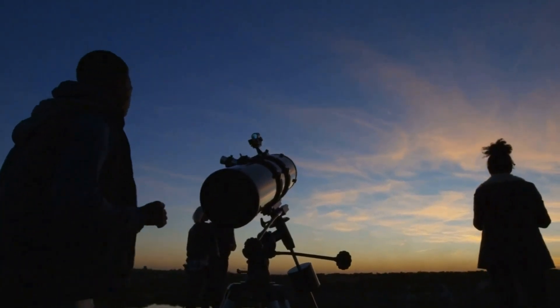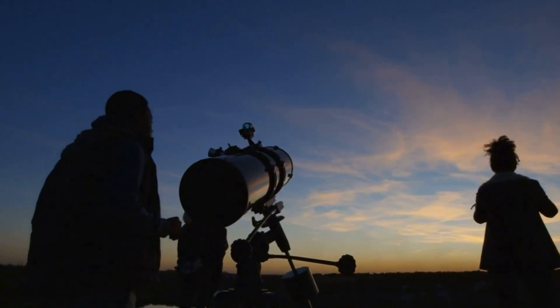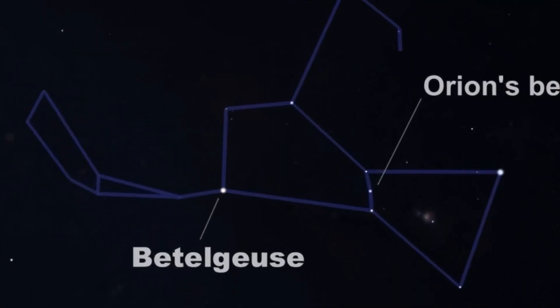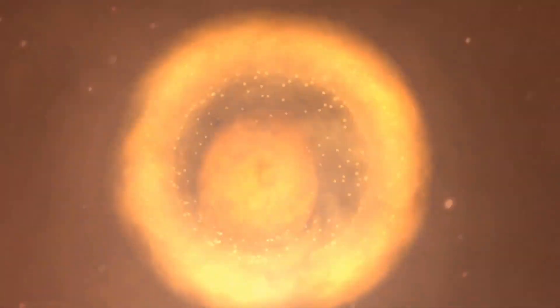For decades, astronomers have kept their eyes on one of the brightest, most enigmatic stars in the night sky. This star is called Betelgeuse, the colossal red supergiant resting in the shoulder of Orion.